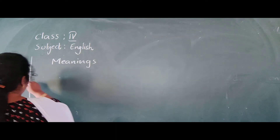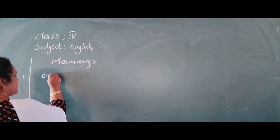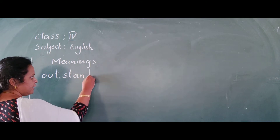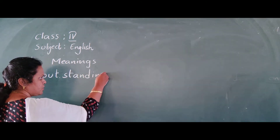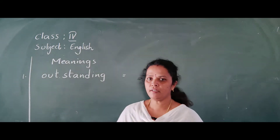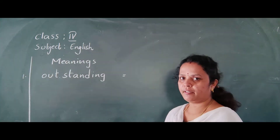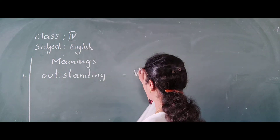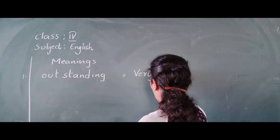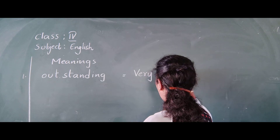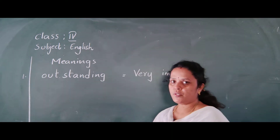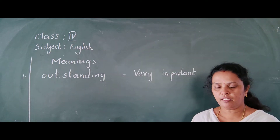First one: Outstanding. O-U-T-S-T-A-N-D-I-N-G. Outstanding means very important. V-E-R-Y I-M-P-O-R-T-A-N-T. Outstanding meaning: very important.